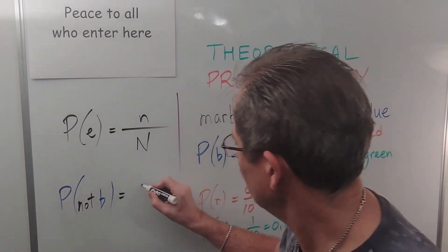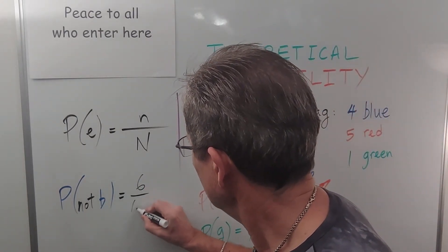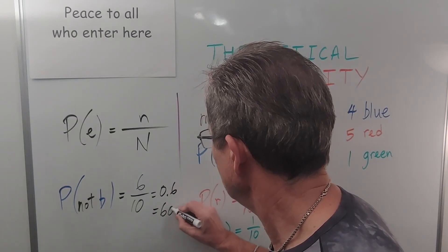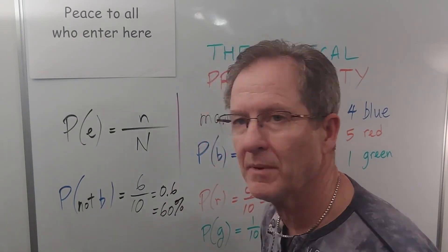There are six that are not blue. Once again, 10, so 0.6 or 60% that probability.